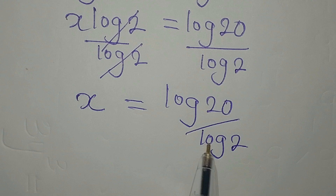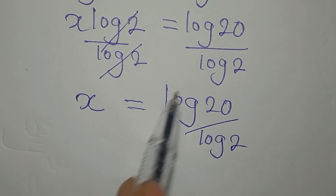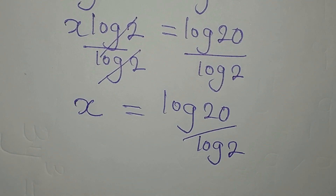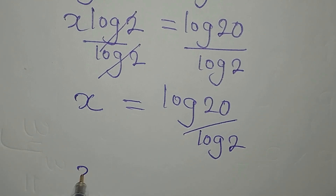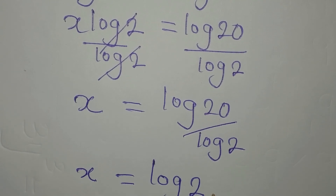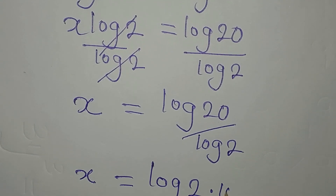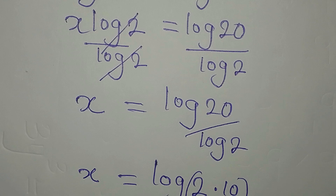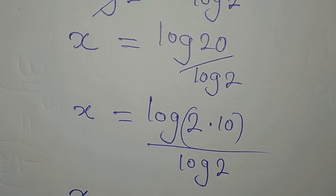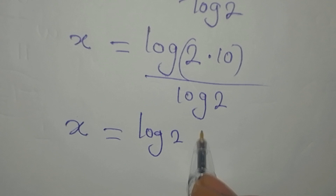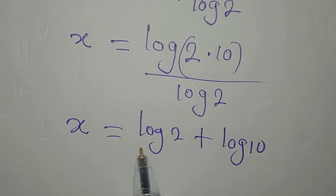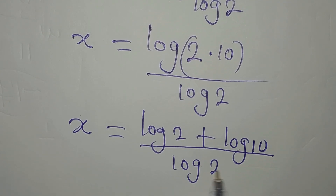We can simplify this. Because 2 can be found in 20, do not simply divide 20 by 2 and write log 10 — that is not correct. Instead, x equals log of 2 times 10, all over log 2. Do not cancel yet. We apply the product rule for logarithms: x equals log 2 plus log 10, divided by log 2.